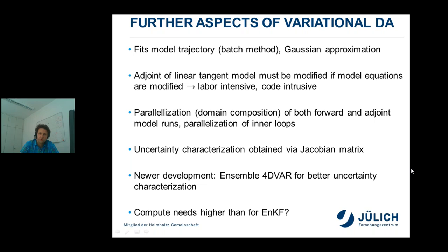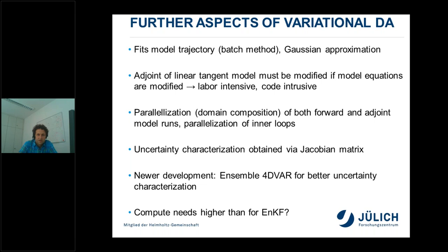A newer development is ensemble variational data assimilation — combining variational DA with an ensemble approach — for better uncertainty characterization. Comparing computational cost in a groundwater flow problem, I found compute needs were larger for variational data assimilation than for ensemble Kalman filter sequential data assimilation, though this may not hold for every problem. If you move to ensemble variational data assimilation, variational DA is in any case more expensive than ensemble Kalman filter.